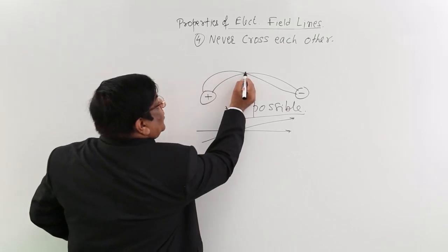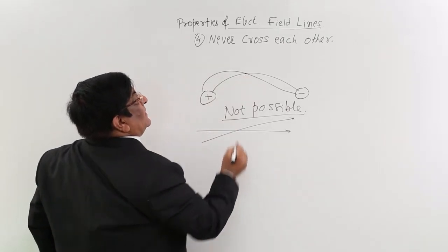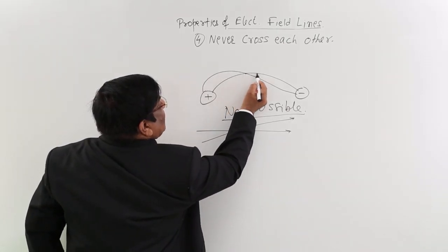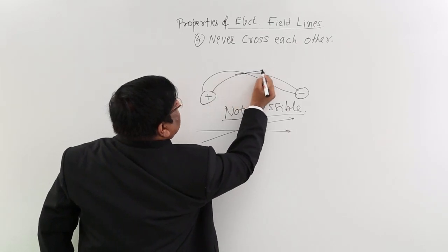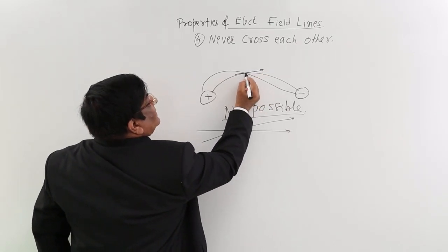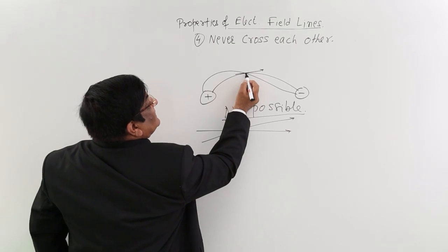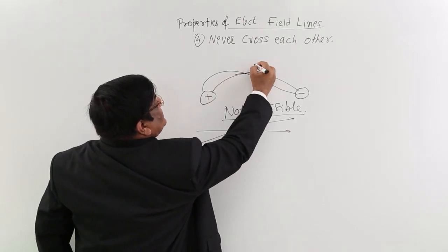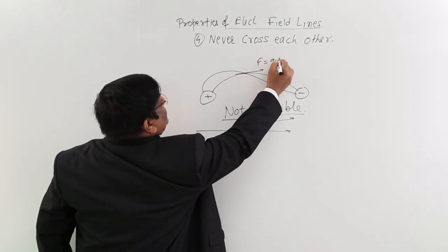Because at the point of intersection, if we take this line as a field line, then the tangent on this shows that force will be experienced in this direction. F is equal to QE,